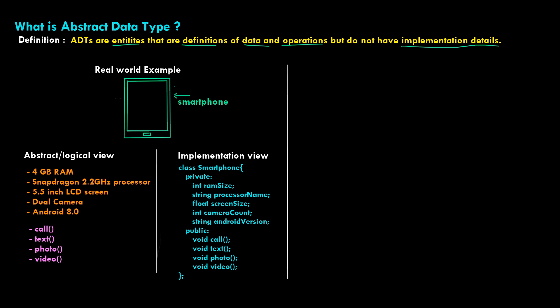Let's take a real world example — a smartphone. If we look at this smartphone in an abstract or logical view, we are just going to be defining what the smartphone has at a high level. For example, this smartphone has 4GB RAM, a Snapdragon 2.2 gigahertz processor, a 5.5 inch LCD screen, dual cameras, and an Android 8.0 operating system. Along with all these properties, this smartphone also has some functionality, operations, and behaviors.